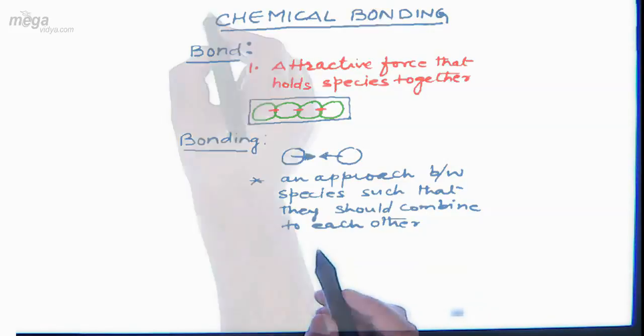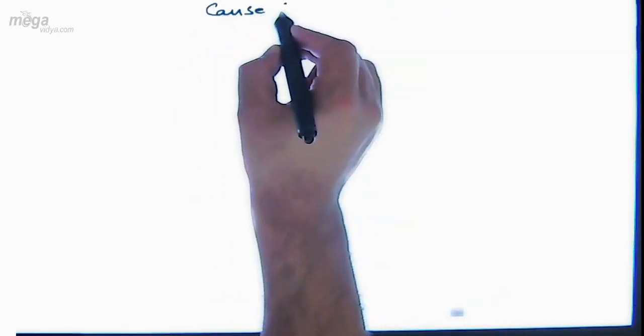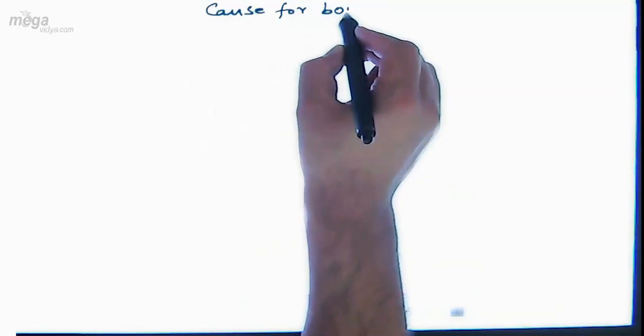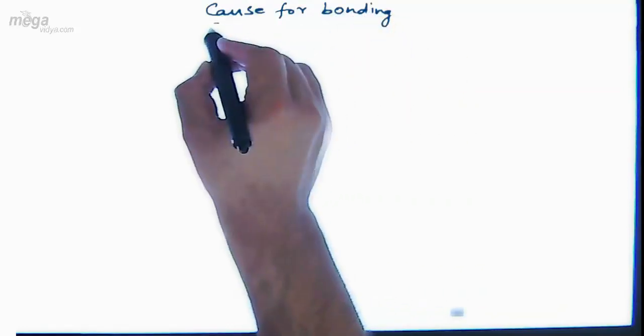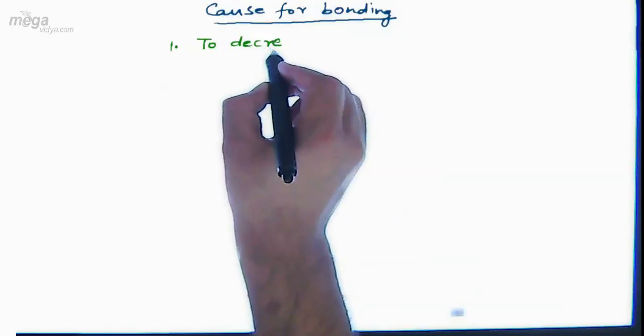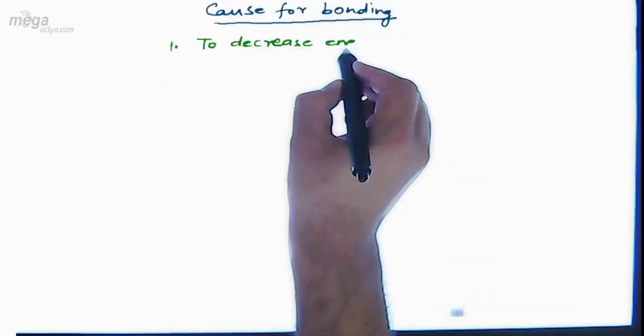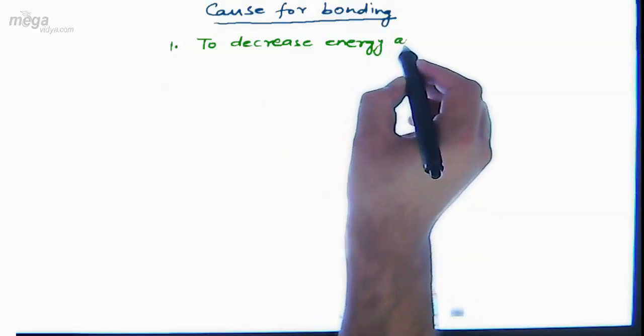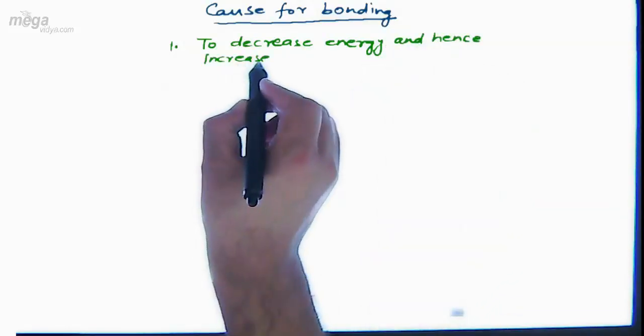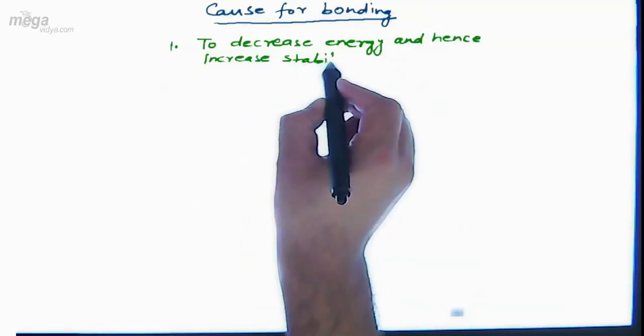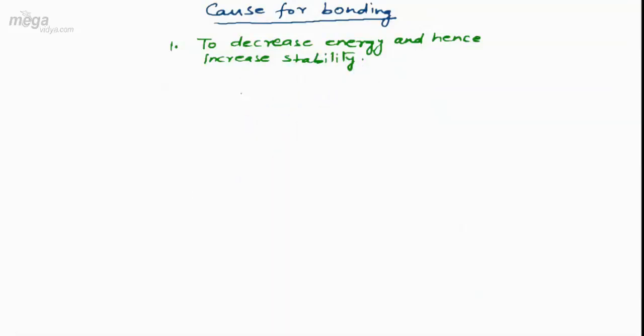Now a question comes: why do species undergo bonding? Why do species try to combine with each other? The cause for bonding — the very first reason — is that during bonding, when species approach each other, there is a decrease in energy, and a decrease in energy increases stability. So species undergo bonding to decrease energy and increase stability.